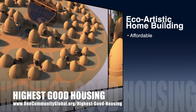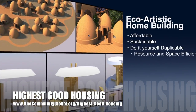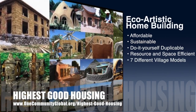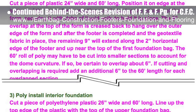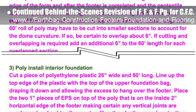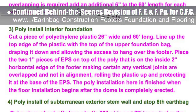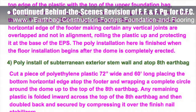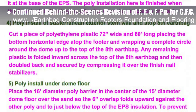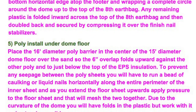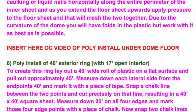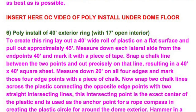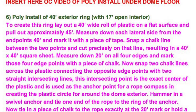The One Community approach to highest good housing is eco-artistic home building that is affordable, sustainable, do-it-yourself duplicable, resource and space efficient, and consists of seven different sustainably constructed village models. This last week, the core team put another 10 hours into the behind-the-scenes revision for the footers, foundations, and flooring page. This week's focus was determining and describing step-by-step applications of polyethylene to various locations within the FFF CAD drawing, adding poly narrative for section 6 construction of footer, section 11 construction of stem walls and dome interior foundation around the 12-inch EPS, and poly details for the dome floor and exterior dome ring sections. We are now 76% complete with this total update and rewrite.